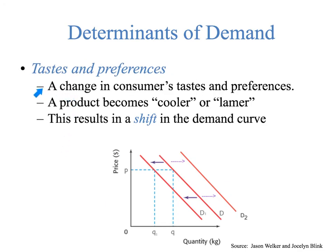Tastes and preferences: a change in consumer tastes is when a product becomes cooler or lamer. If something becomes really cool because someone famous endorses it, demand for that product shifts outward — at every price point people want to buy it. If something becomes really lame, demand at every price point goes down and you see an entire shift of the demand curve. This could also be something like finding out chicken prevents cancer — that would push demand up. If chicken were found to cause cancer, the opposite would be true. Since tastes and preferences are not on the graph's axes, it results in a shift of the demand curve.